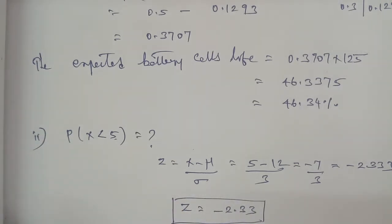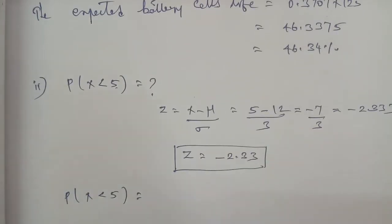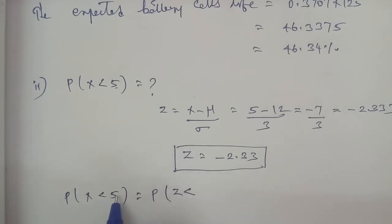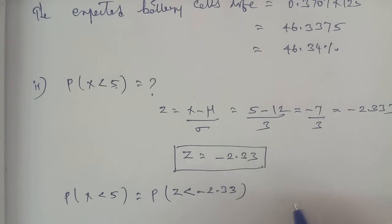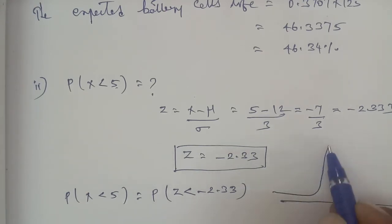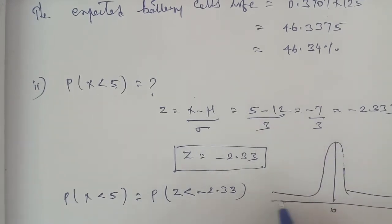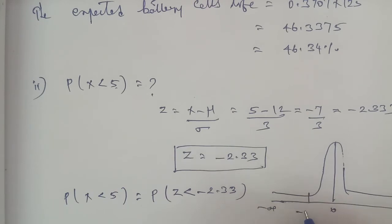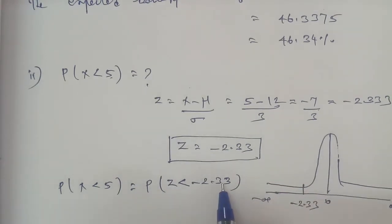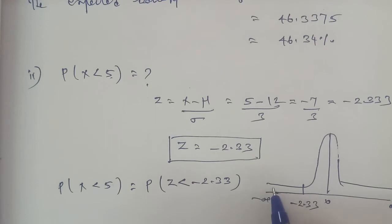P(X < 5) corresponds to Z < −2.33. On the bell-shaped normal distribution curve, the area from minus infinity to −2.33 is the region to the left of −2.33. This equals 0.5 minus the area from −2.33 to 0.